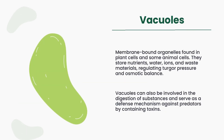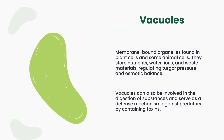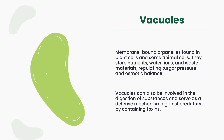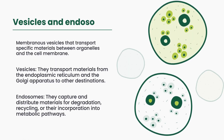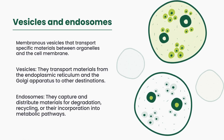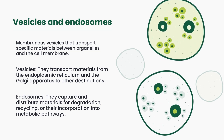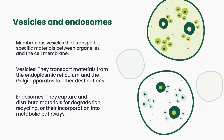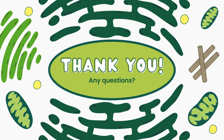Vacuoles store nutrients, water, and waste materials, regulate turgor pressure, and serve as a defense mechanism against predators. Vesicles and endosomes transport materials between organelles and the cell membrane, facilitating cellular processes and maintaining homeostasis. Thank you for joining us today. Do you have any questions or thoughts you'd like to share?